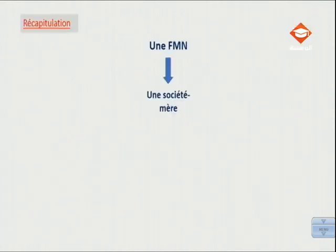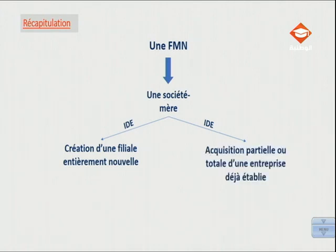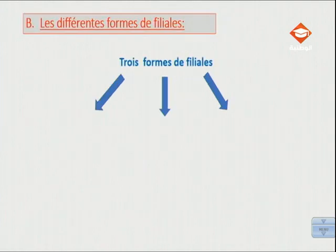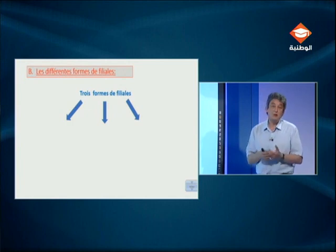Pour récapituler, une firme multinationale est constituée d'une société mère qui réalise des investissements directs à l'étranger pour soit créer une filiale entièrement nouvelle, seule ou en partenariat, soit acquérir partiellement ou totalement une entreprise déjà établie. Les firmes multinationales ont des stratégies différentes, c'est-à-dire qu'elles peuvent poursuivre certains objectifs spécifiques qui demandent l'implantation d'une forme particulière de filiale.